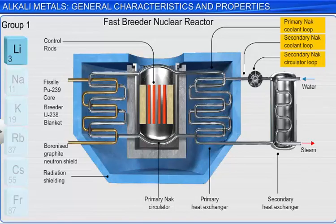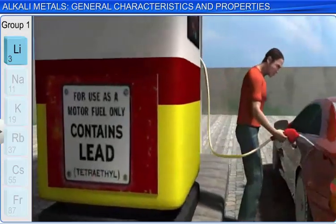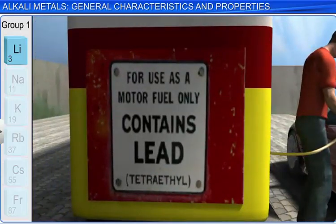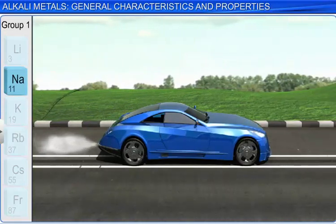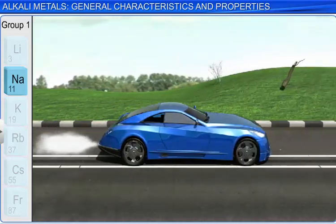Liquid sodium is used as a coolant in fast breeder nuclear reactors. At one time, a sodium lead alloy was used to produce organolead compounds such as tetraethyl lead, which was used as an anti-knock agent in automobile fuel. The use of leaded gasoline was phased out due to the environmental pollution that it caused.